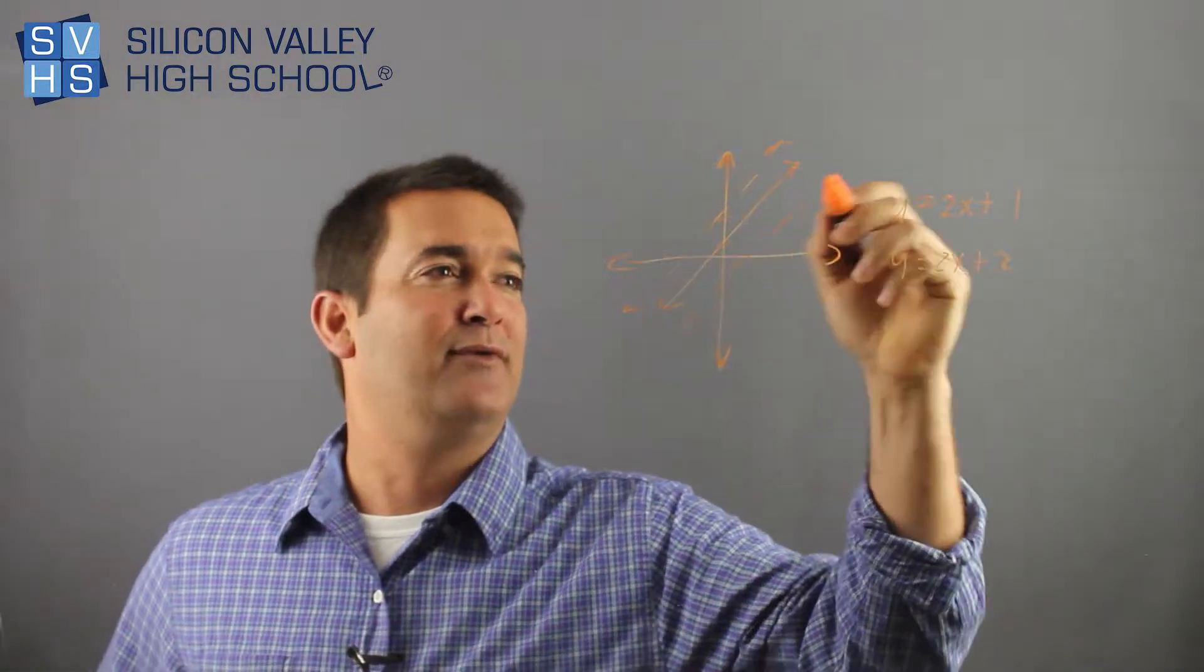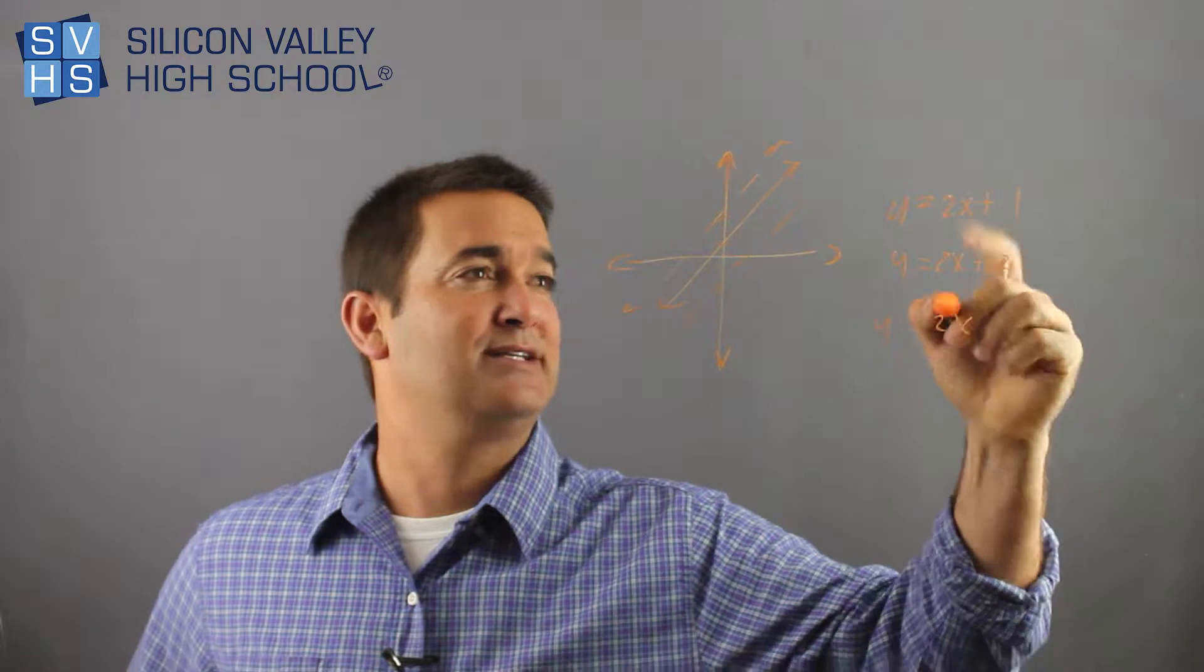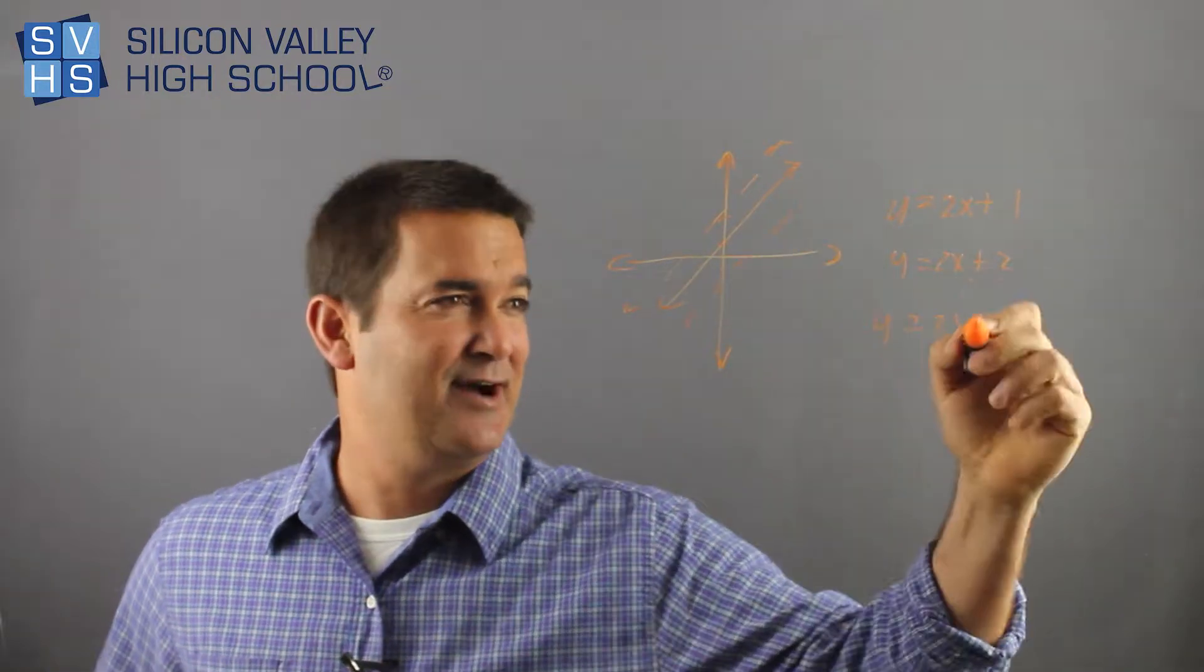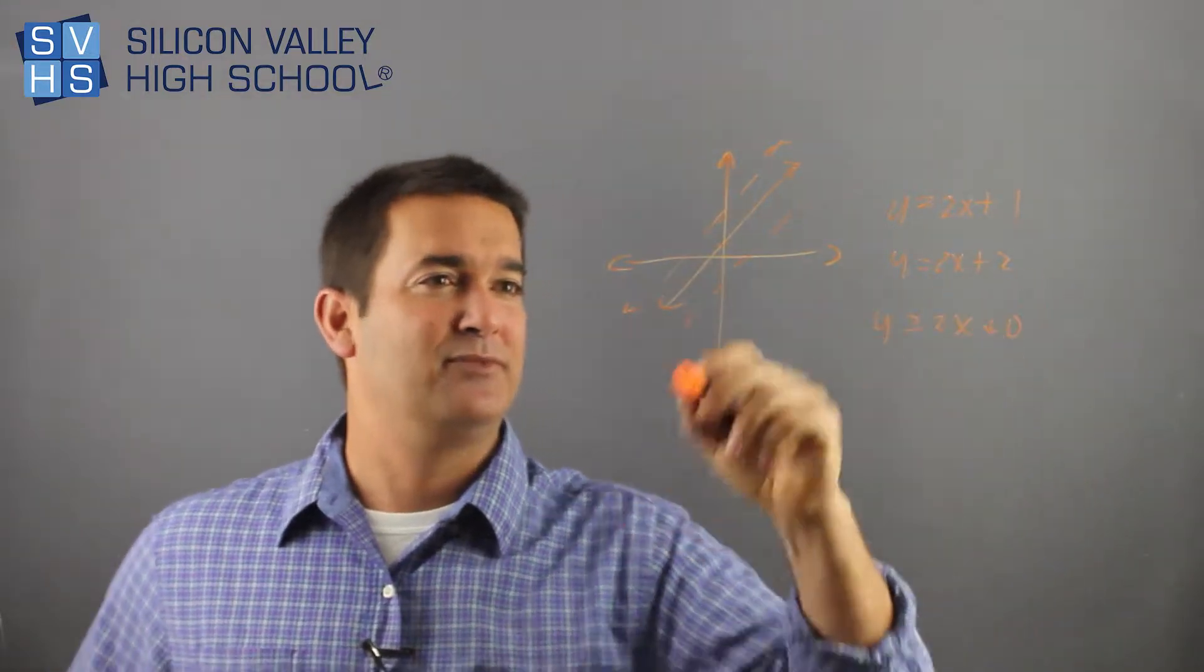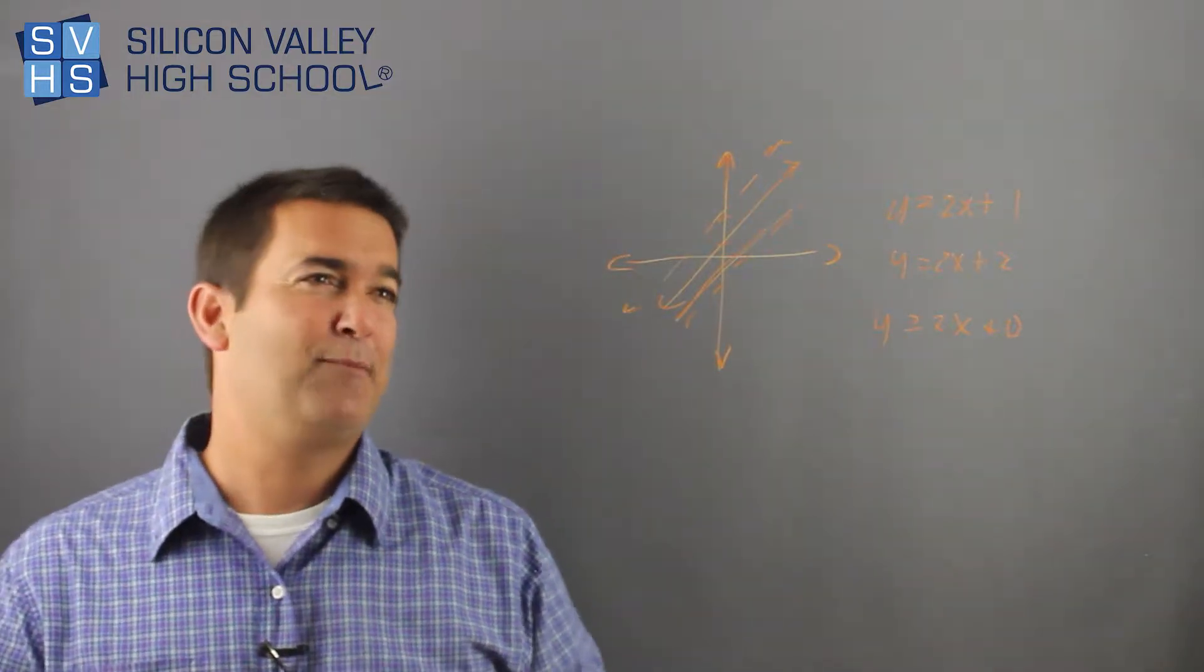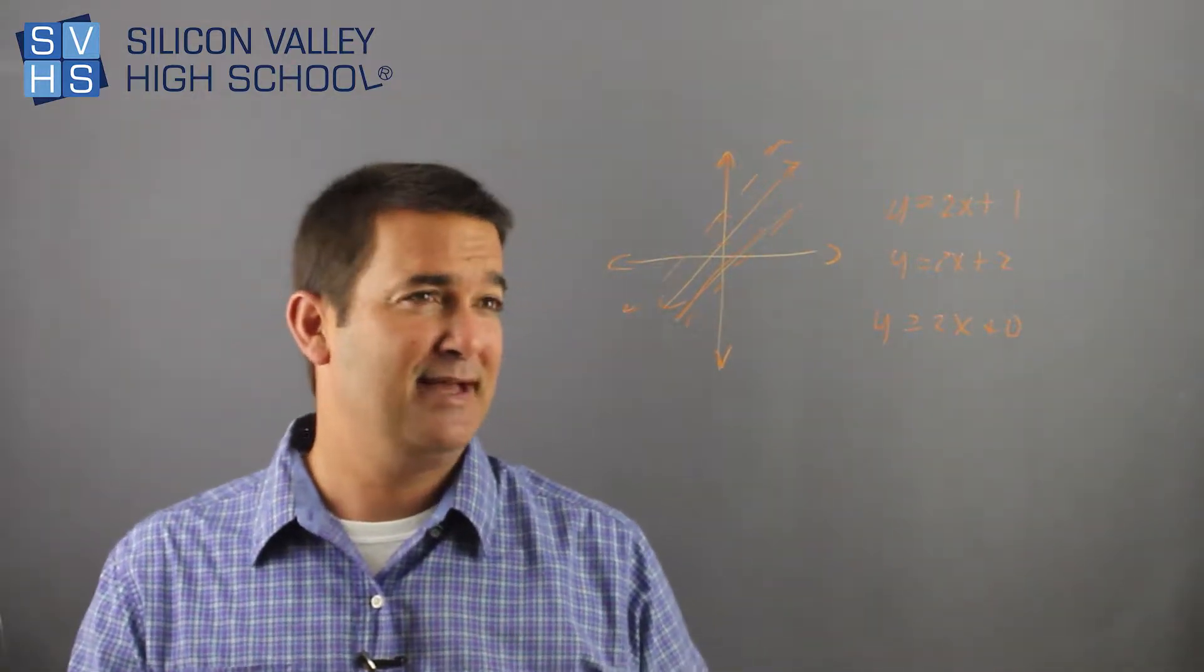You could also go down 1, right? And you would have y equals 2x, it used to be plus 1, I went down 1, so now that's plus 0, even though that's not very accurate. So you get the point, up and down makes sense.